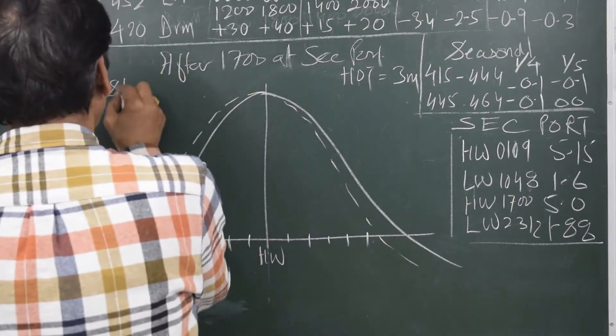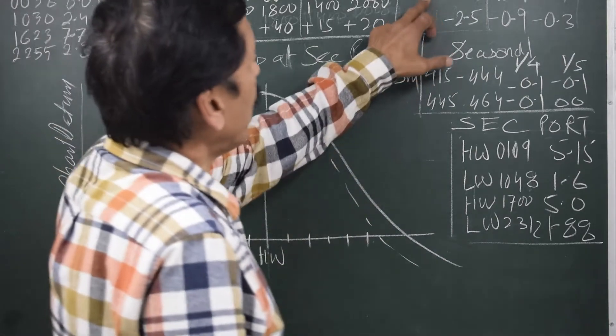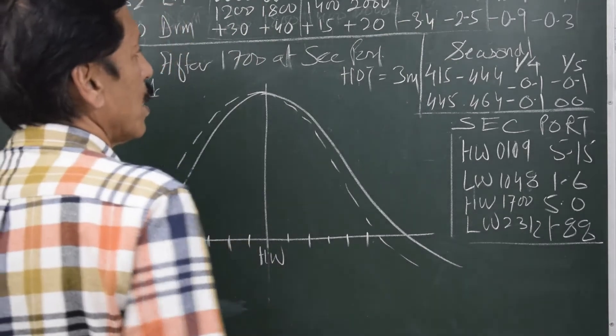So let us see what is the spring range for the standard port. Standard port - the spring is the difference between 9.3 and 0.9, so it is 8.4.